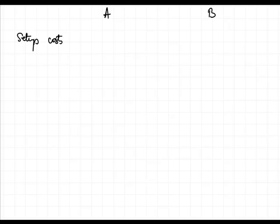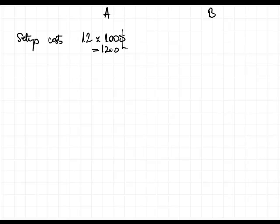The cost per activity is $100 for a setup. Product A requires one setup for each batch manufactured, and we manufacture 12 batches. So we have 12 batches multiplied by $100, which amounts to $1,200.